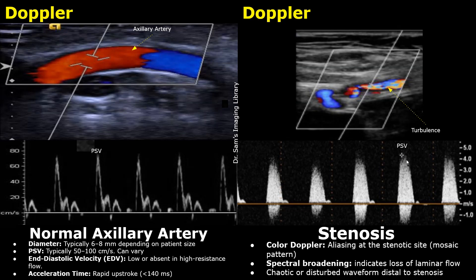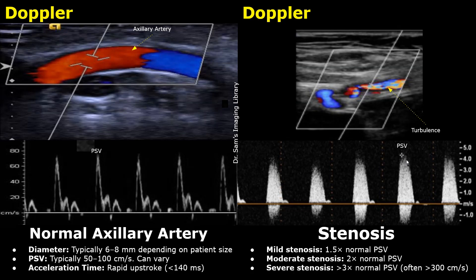The PSV increases in stenosis. In a mild stenosis, the PSV can be 1.5 times greater than normal PSV, so if the PSV is around 150 cm per second it may be due to mild stenosis. In a moderate stenosis, the PSV can be 2 times the normal PSV. So if a normal PSV is 80 cm per second in the other arm, then a PSV of around 160 to 200 cm per second can be seen in moderate stenosis.